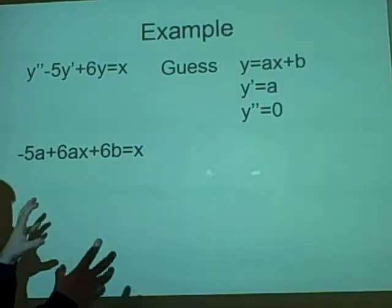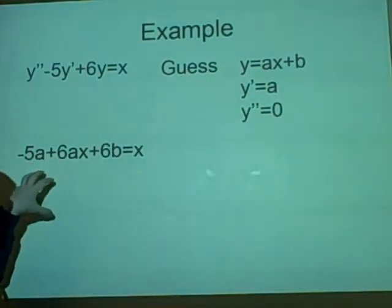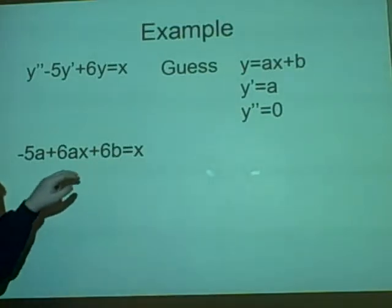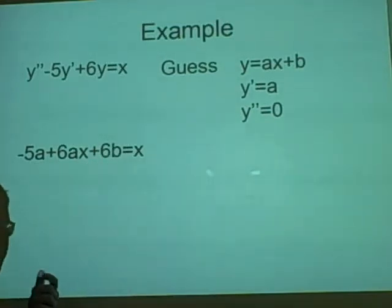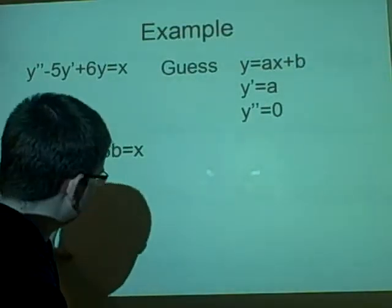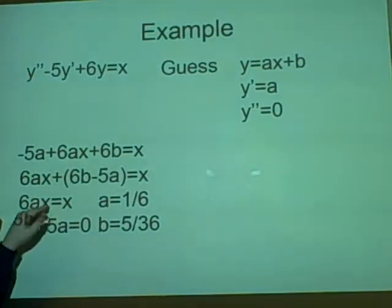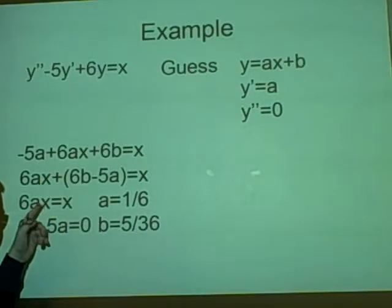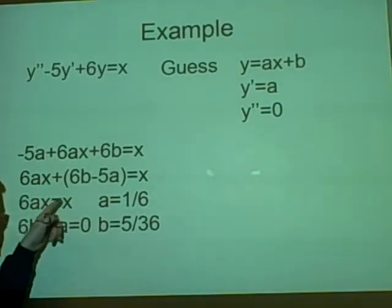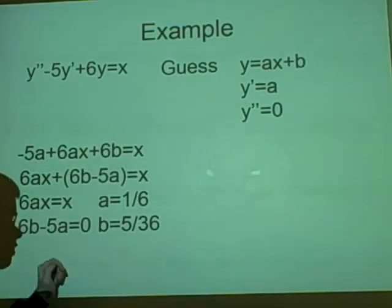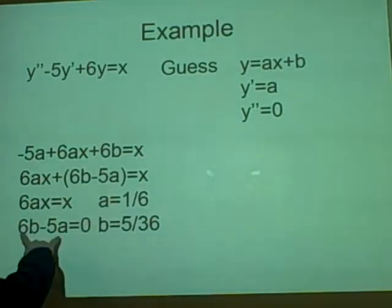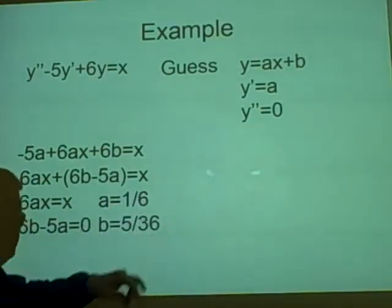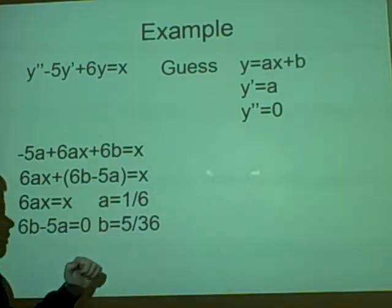Now what we do here, we collect like terms. So we put all the x's together, so we've got 6ax. Then we've got this stuff, which is just a variable, so we have 6b-5a. And then we can just equate it. So we have the 6ax equals the x, we move the x over, and that becomes 1. So we move the 6 over, it becomes a=1/6. And then we've got this part which equals 0, because there isn't any constants over here. And that will give us b=5/36.